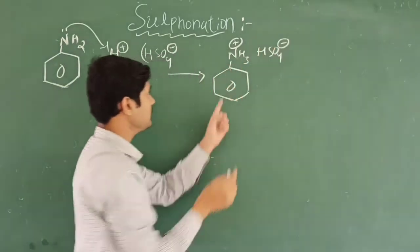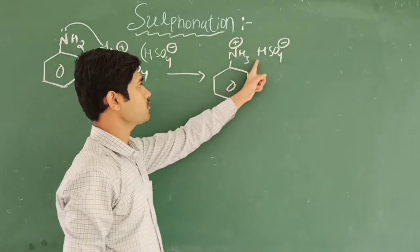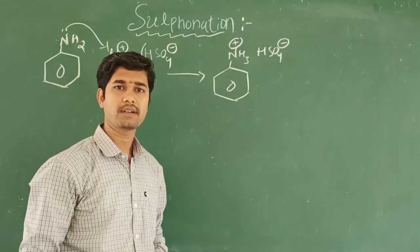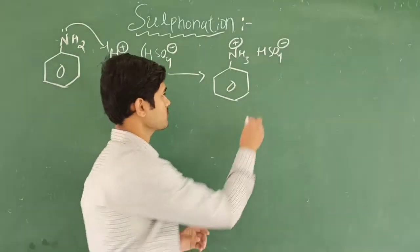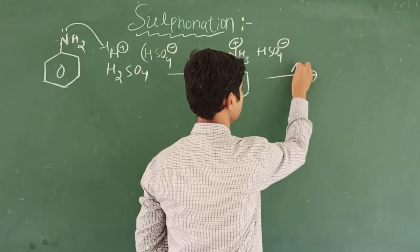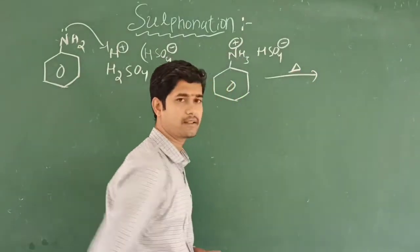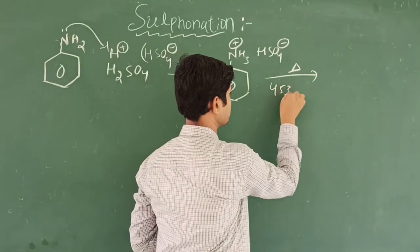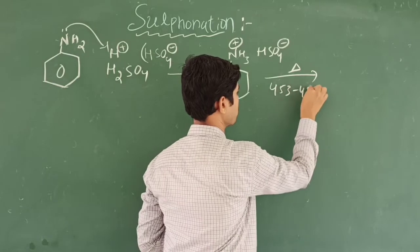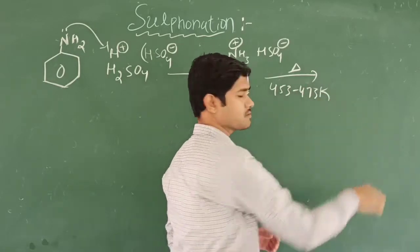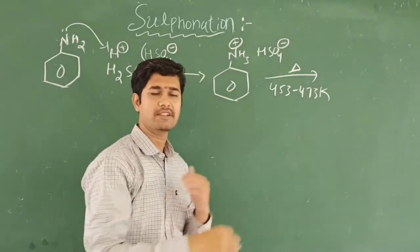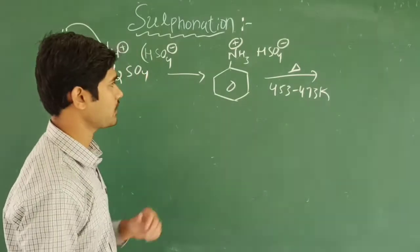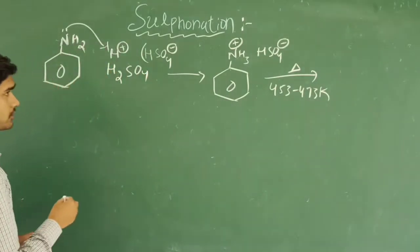Its name is anilineum hydrogen sulfate. On further heating — around 453 to 473 K — some interchange takes place in this reaction and I am going to write the final product.